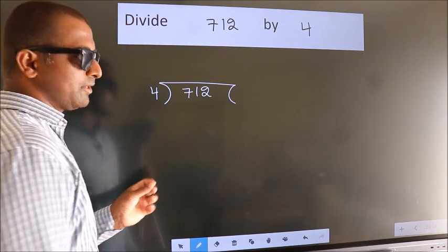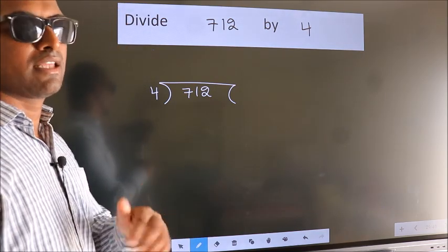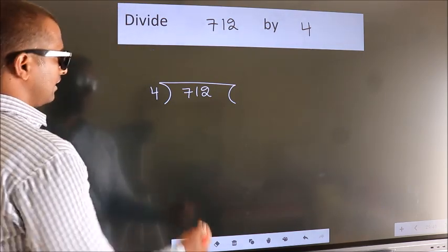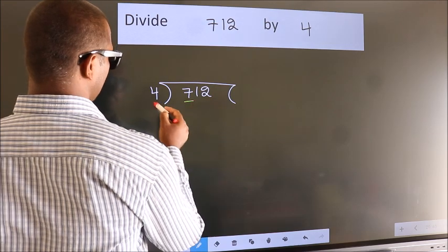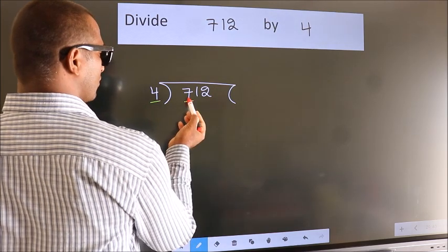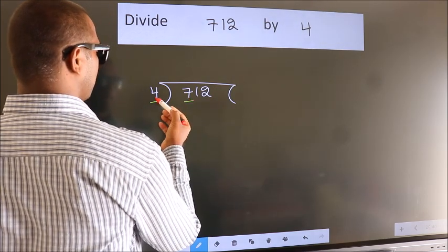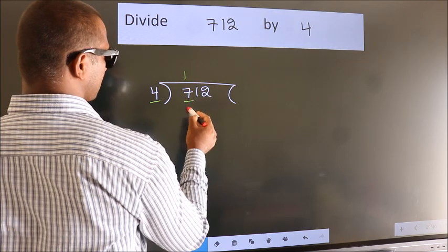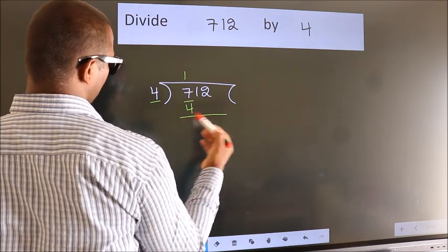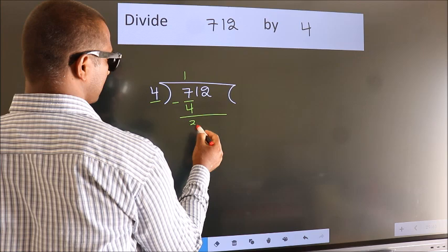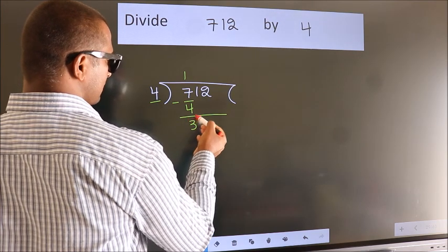This is your step 1. Next, here we have 7. Here, 4. A number close to 7 in the 4 table is 4 ones 4. Now we should subtract. We get 3 after this.